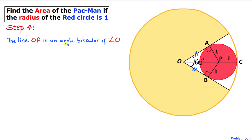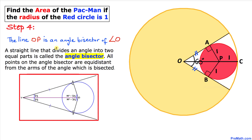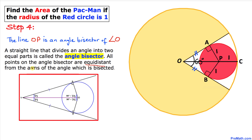Now let's focus on line OP — it is an angle bisector of angle O. A straight line that divides an angle into two equal parts is called the angle bisector, and all points on the angle bisector are equidistant from the arms of the angle being bisected. Therefore, the 60-degree angle is divided into two equal parts: this angle is 30 degrees, and the other half is 30 degrees as well.